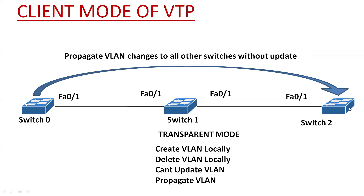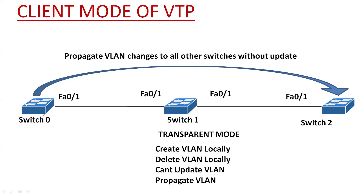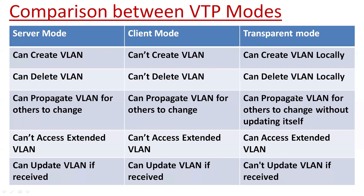In transparent mode, the switch can create, delete, and rename VLANs locally, but that is limited to that switch only and cannot be forwarded to others. However, if any VTP information is received by this switch, it will forward that information to the next switch without updating its own database. This is the key property of a transparent mode switch.